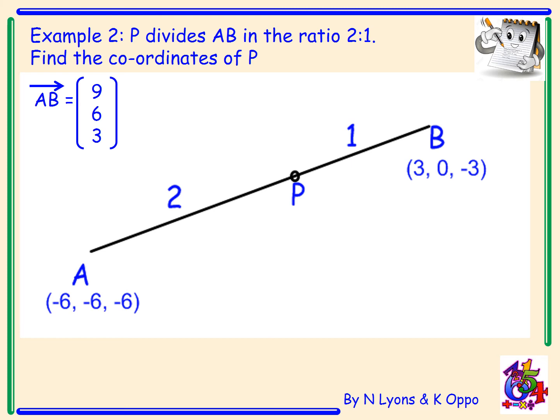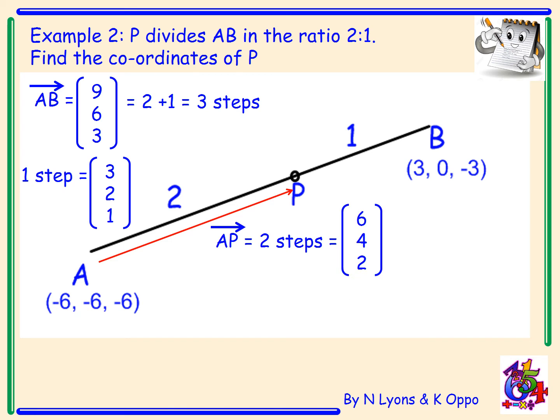Let's have a look again. So AB is the vector (9, 6, 3). And that's the same as saying three steps along the line. I've got two steps to get to P, another one step to get to B. So 2 plus 1 is 3. So the vector (9, 6, 3) equals three steps. But what does one step equal then? I just divide each component by 3. And that gives me the vector (3, 2, 1). But I want to find the length of AP. I want to get to P. So the vector AP equals two steps. So that equals the vector (6, 4, 2).